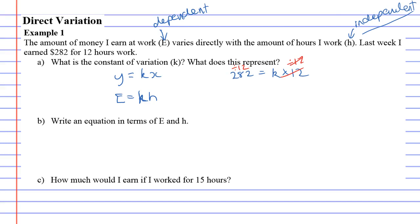Let's grab the calculator. 282 divided by 12 comes to 23.5. So K equals 23.5 or $23.50 per hour. That's our hourly rate.